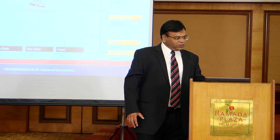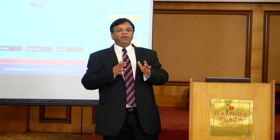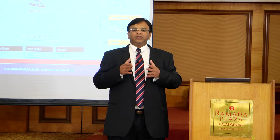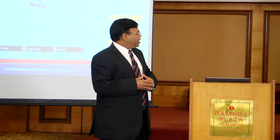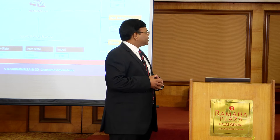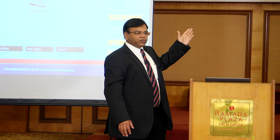Let's look at the quick impact area on the three broad sectors: manufacturing, trading, and service sectors. When you look at the manufacturing sector, we have a chart here where we have all the creditable taxes in green color and non-creditable taxes in red color.